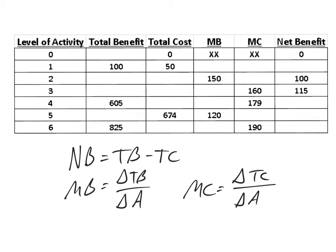So if we know these particular areas, how do we go about solving? Let's start with the first row. The level of activity is zero, so we're not going to have any total benefit when we don't have any activity. For the next row, marginal benefit — going from zero to one, the change is one, and we're going from zero to 100 in total benefit, so marginal benefit is 100. Marginal cost is the change in total cost divided by change in activity: 50 over one equals 50. Net benefit is total benefit minus total cost: 100 minus 50 gives us a net benefit of 50.